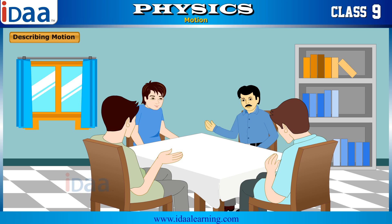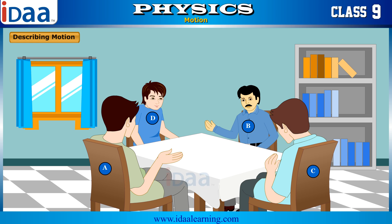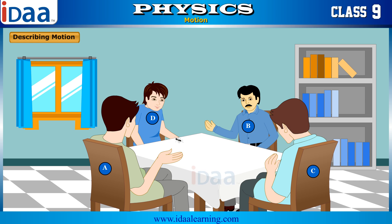Describing motion. Let us look at the following scenario. Four friends are sitting around a table with one person on each side. Let us call them A, B, C and D. The tablecloth placed on the table is white and has no markings. An ant has been placed by one of the friends and it started moving from that position.